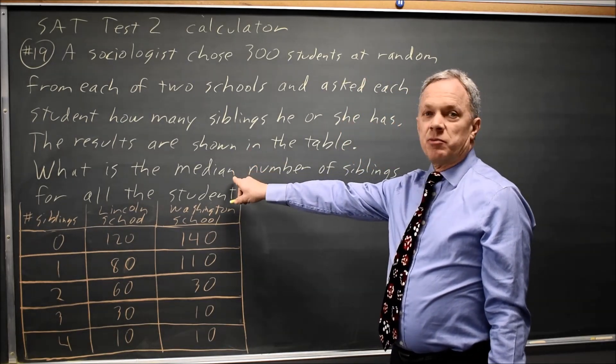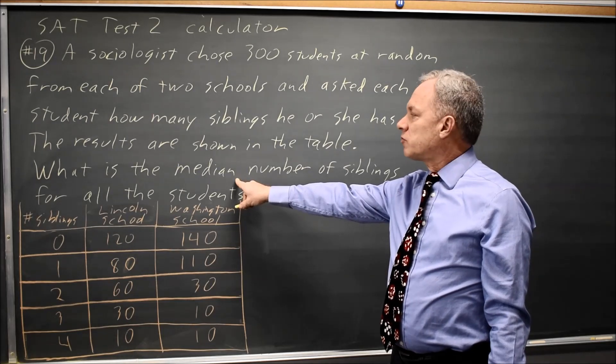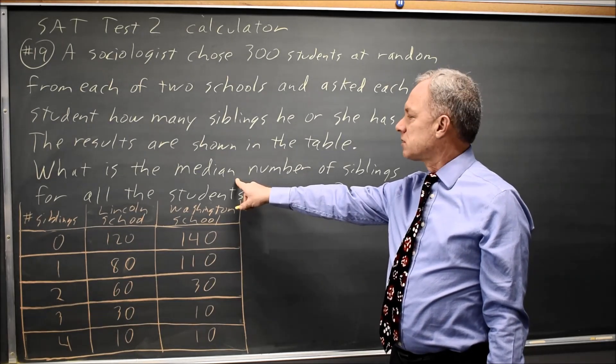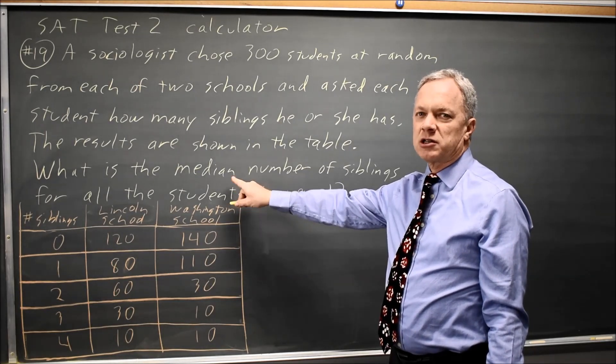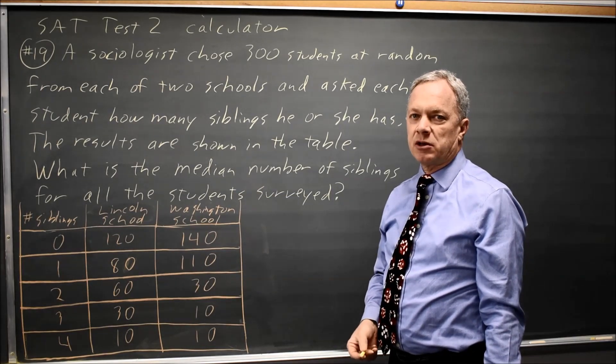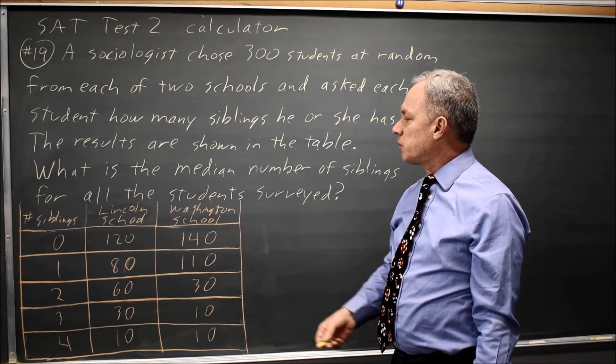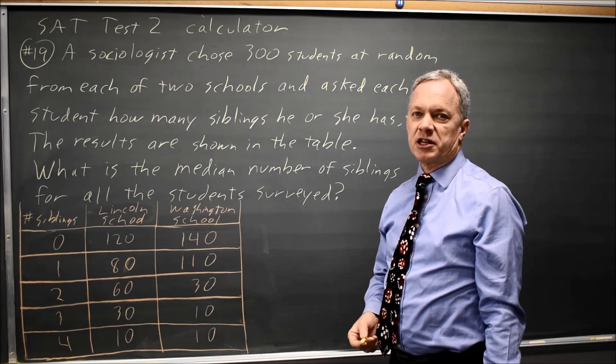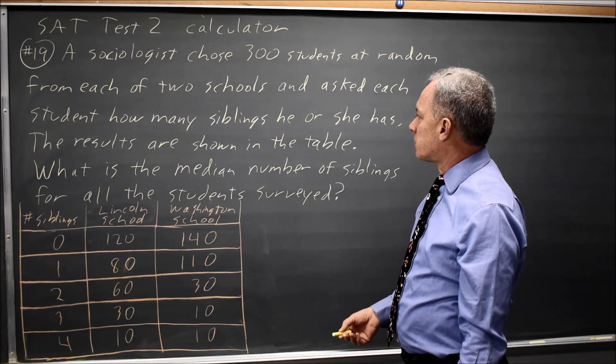The median number is the middle number from all the students who were surveyed. The College Board often asks about either the mean or the median. The mean, we would add up how many siblings they all have and then divide by the number of students. Here we're looking for the middle number.